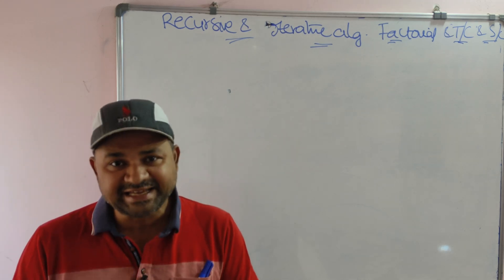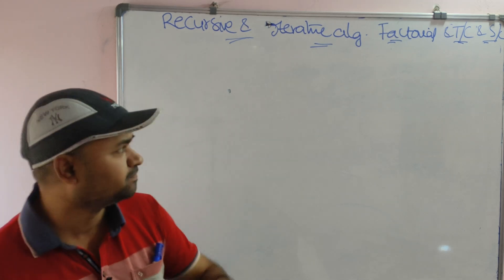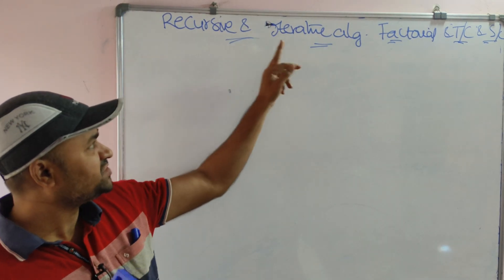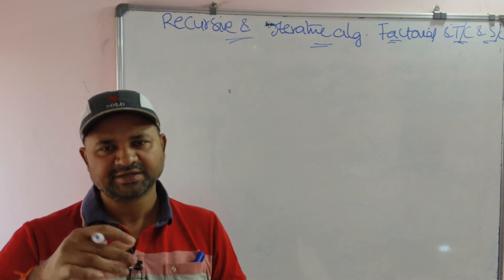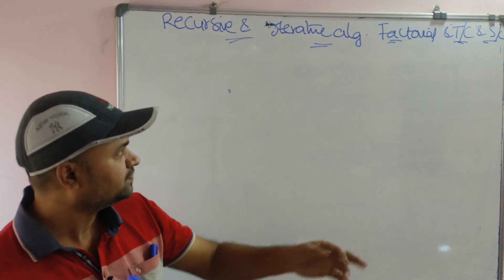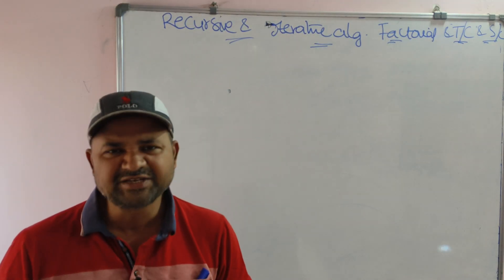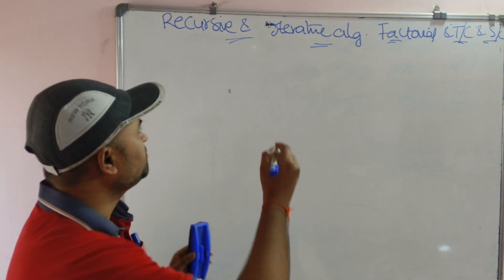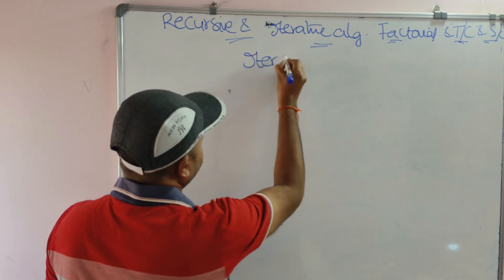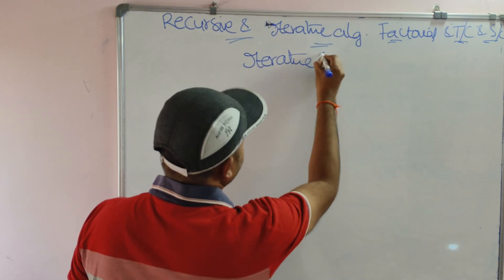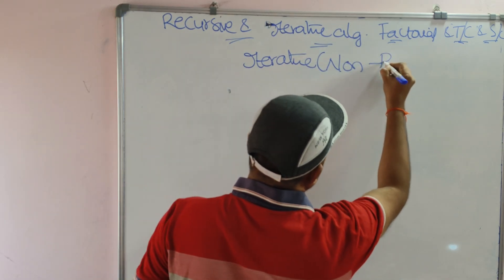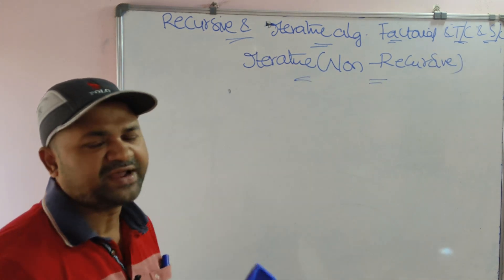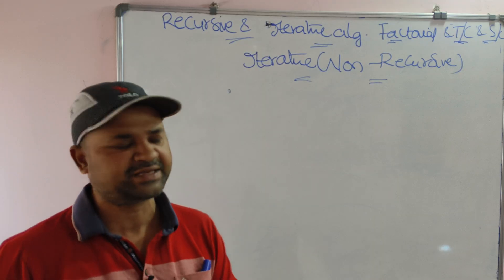Let's see an algorithm to find the factorial of a given number using recursion as well as iteration (non-recursive), and analyze the performance of the algorithm using time complexity and space complexity. First, let's see the iterative approach. Iterative approach means non-recursive approach, so we need to write the algorithm and find the time complexity and space complexity.